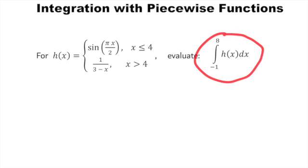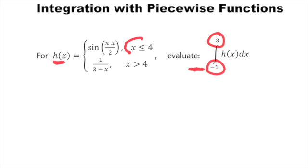So if you're trying to evaluate this definite integral of h of x from negative 1 to 8, and h of x is this piecewise function. Now it starts at negative 1 and negative 1 belongs to this first piece. This is for all x values less than or equal to 4, so negative 1 is certainly less than 4. But notice the integral ends at the x value of 8.